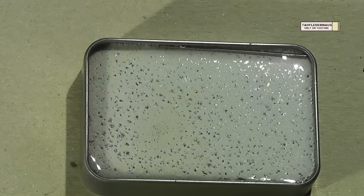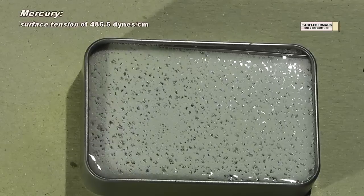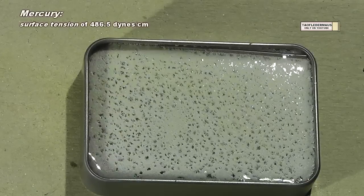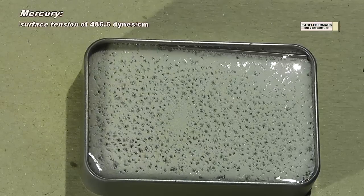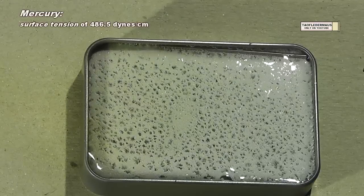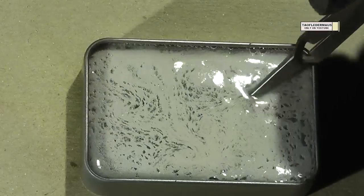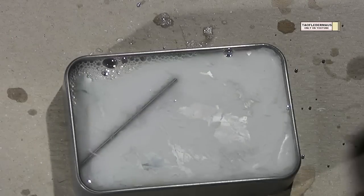And of course this is attributed to the extremely high surface tension that mercury possesses. Not only is mercury the liquid with the highest density at room temperature, it also is the liquid with the highest surface tension.